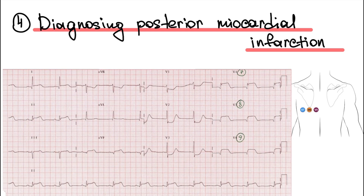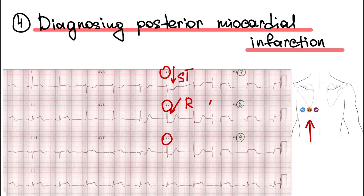Posterior myocardial infarction. On a 12-lead ECG, we can see only reciprocal ST segment changes. For posterior myocardial infarction diagnosis, we need to also use additional posterior leads V7, V8, and V9. On a 12-lead ECG, we can see ST segment depression, a high R wave at leads V1 to V3, and a positive T wave at leads V1 to V3.